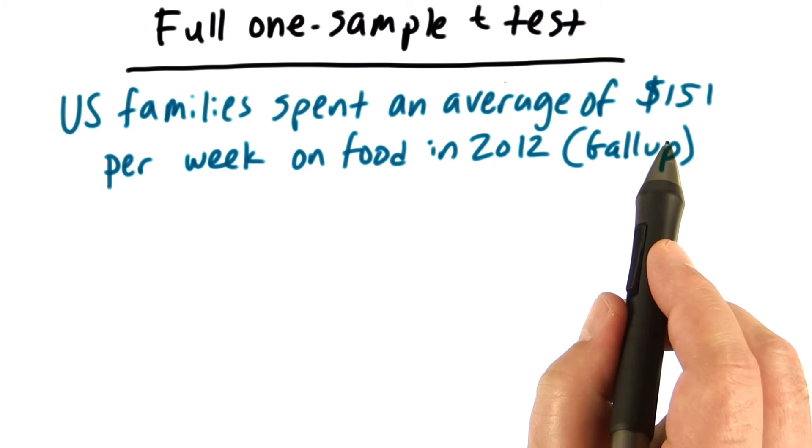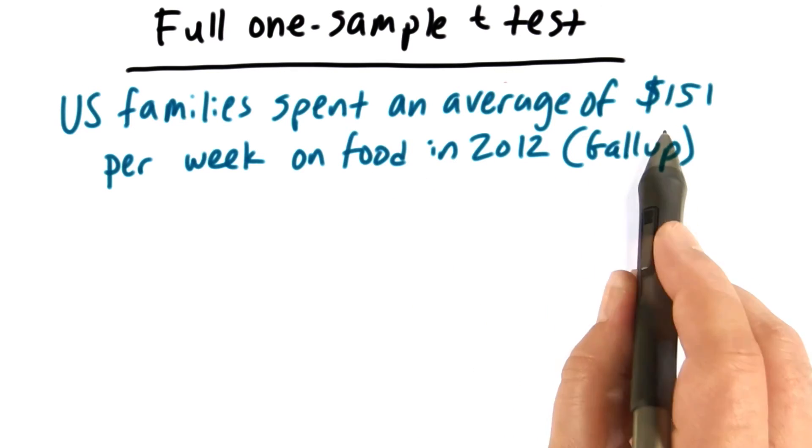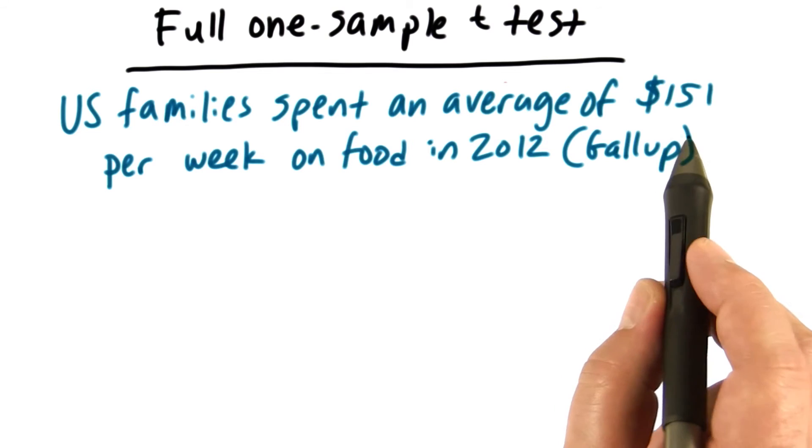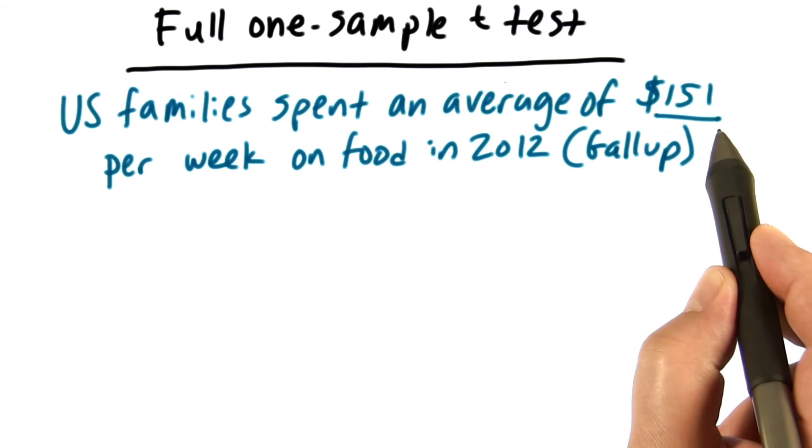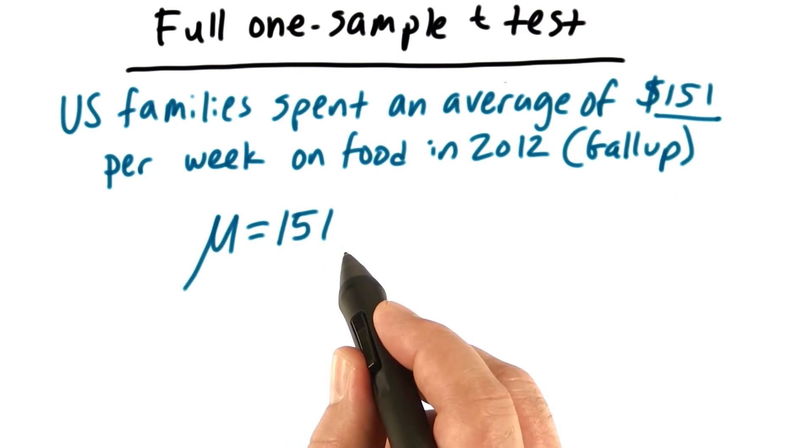Now, although this data came from a sample, we're going to pretend that this perfectly represents the whole population. So we're going to just assume that this is mu. Make sure you write that down, mu equals 151.